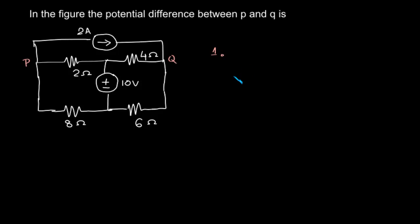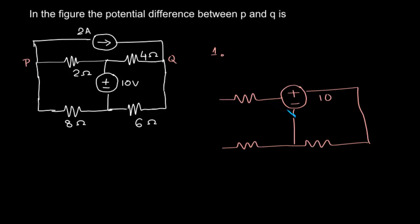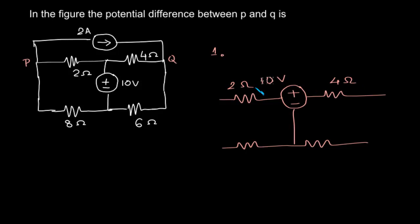We will see the case when we retain the 10 volt voltage source and remove the other current source. The current source must be open-circuited to make its value zero. We will now redraw the circuit — we have resistances of 4 ohm, 2 ohm, 8 ohm, and 6 ohm.